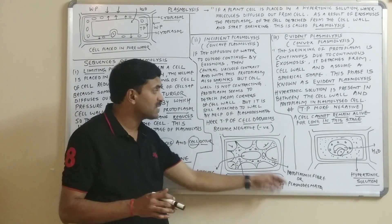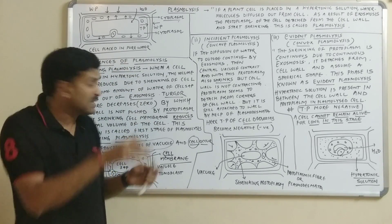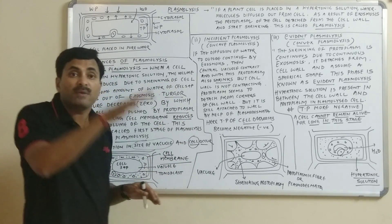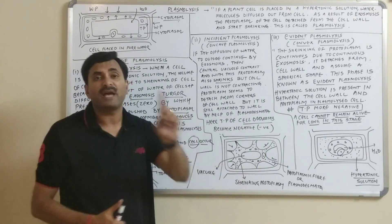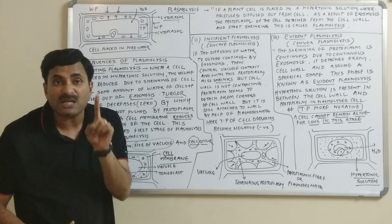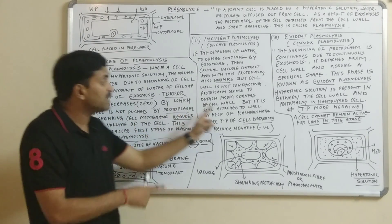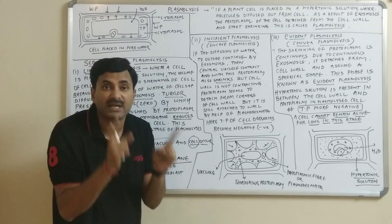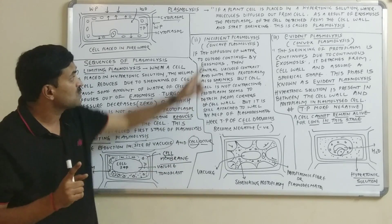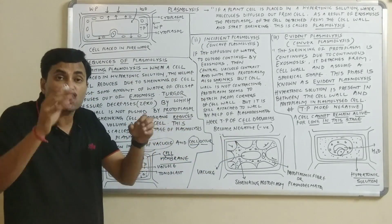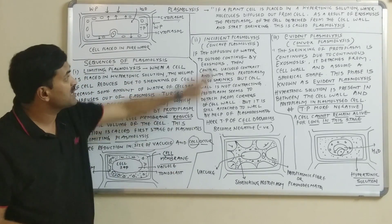In incipient plasmolysis, the TP of the cell decreases below zero — it becomes negative. The TP was zero in limiting plasmolysis because there was no protoplasm shrinkage, but here as the protoplasm is shrunken, the TP becomes negative. Always remember: TP or pressure potential (Ψp) is always negative in the case of a plasmolyzed cell. In incipient plasmolysis, the protoplasm has started separating from the cell wall but is still attached to it.